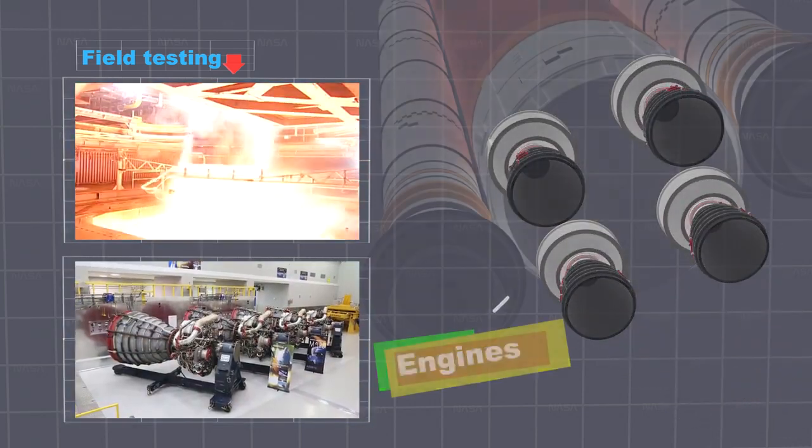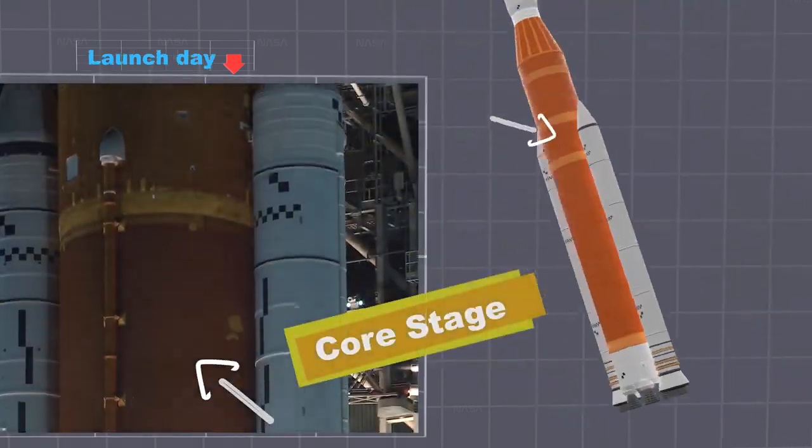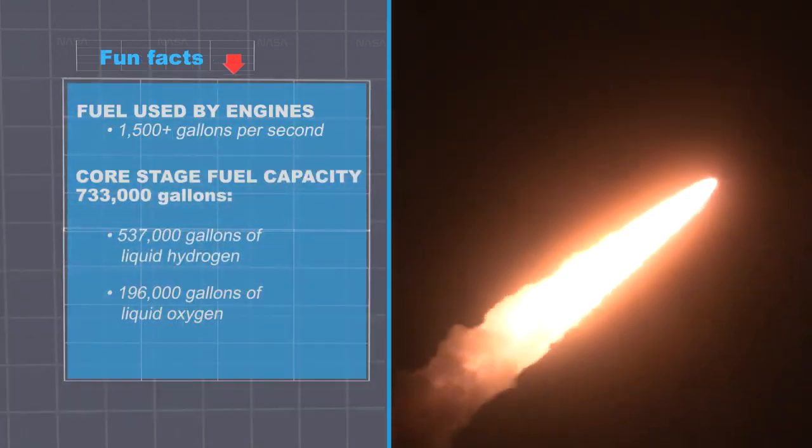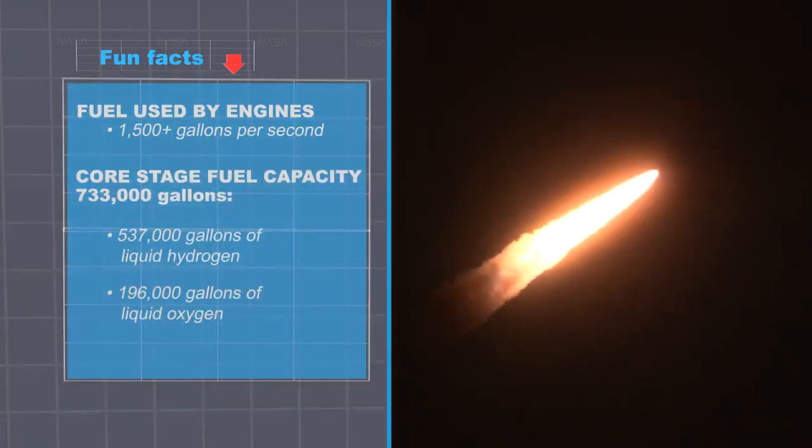Assisting the boosters are four engines at the base of the core stage, which burn up more than 1,500 gallons of liquid propellant each second.